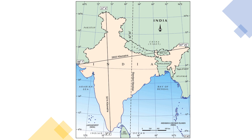West to east it extends for about 2,900 kilometers, from 68 degrees 7 minutes east to 97 degrees 25 minutes east. The westernmost point is Gujarat and the easternmost point is Arunachal Pradesh. Peninsular India is roughly triangular in shape.